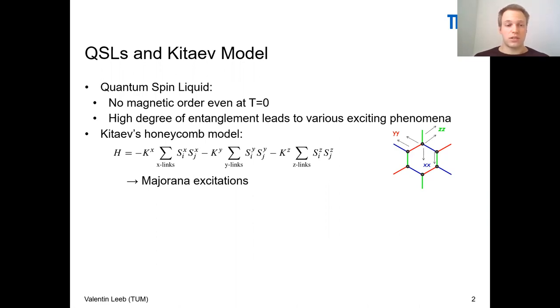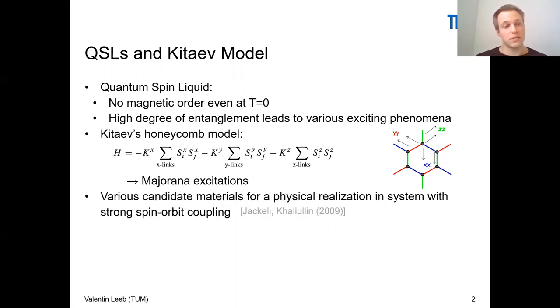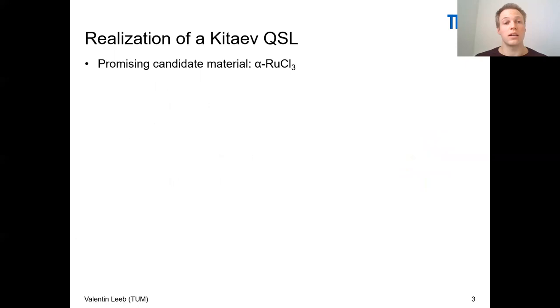Another reason why this model has been studied widely in the last years is that various candidate materials have been discovered which would be a physical realization of this Kitaev honeycomb model. All these materials have strong spin-orbit coupling, and one material I would like to introduce today is alpha-ruthenium trichloride.